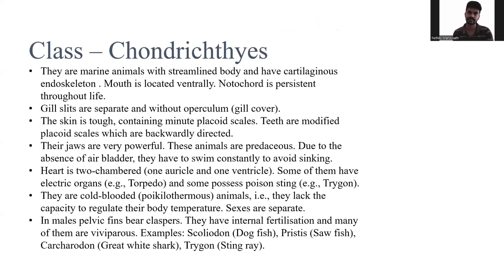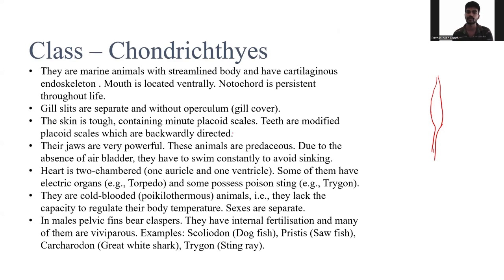The next class is Chondrichthyes. These are marine animals with a streamlined body and cartilaginous skeleton. The mouth is located ventrally, and the notochord is present throughout their life. Gill slits are separate and without operculum — meaning the gills are not covered by any protective structure, they are open.